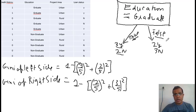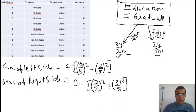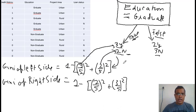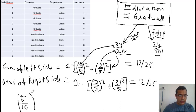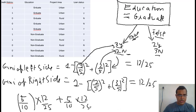The Gini score on the left side is: 1 minus (3/5)² minus (2/5)², because there are five records on the left side. I have already calculated the value and it comes out to be 12/25. On the right side it also comes out to be 12/25. Taking the weighted score: (5/10) × (12/25) + (5/10) × (12/25), the final value comes out to be 0.48.